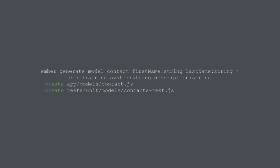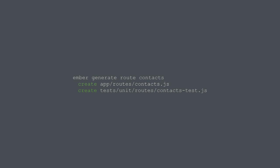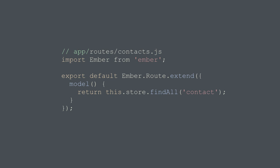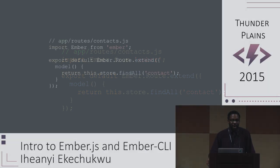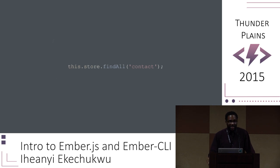Next let's generate a contact model and its respective attributes. Here's the output from our generate command. Now let's generate a route for displaying all of our contacts. But how does our route know what data corresponds to our model at this route? By adding a model function and making a call to store.find('contact'), our Ember application will send an HTTP request to /api/contacts to fetch every single contact, serialize it, and store it client-side. This cuts down on a significant amount of boilerplate — no more writing long AJAX calls.